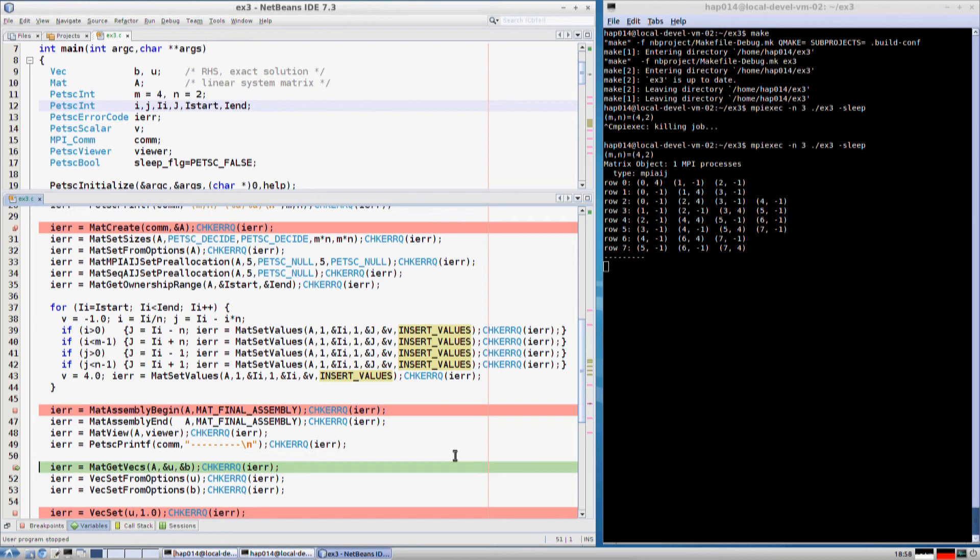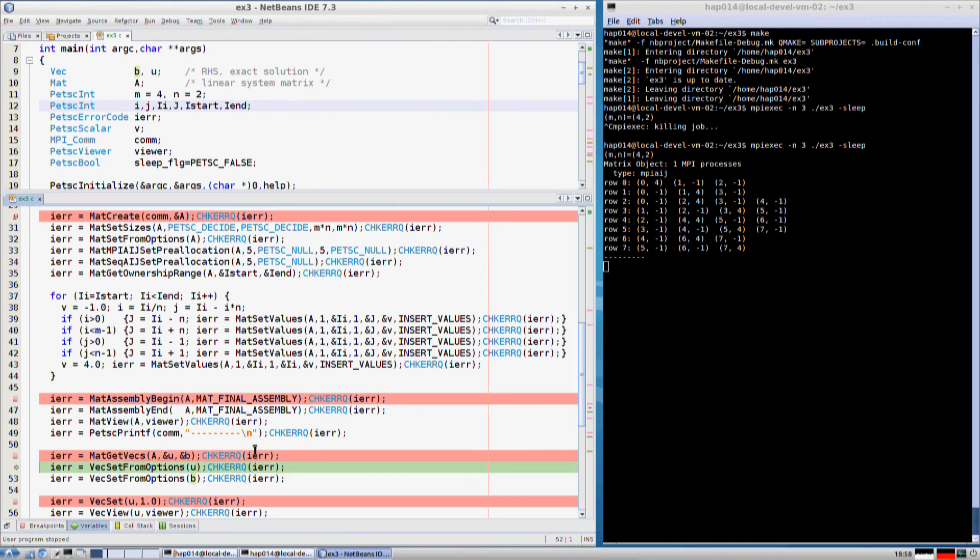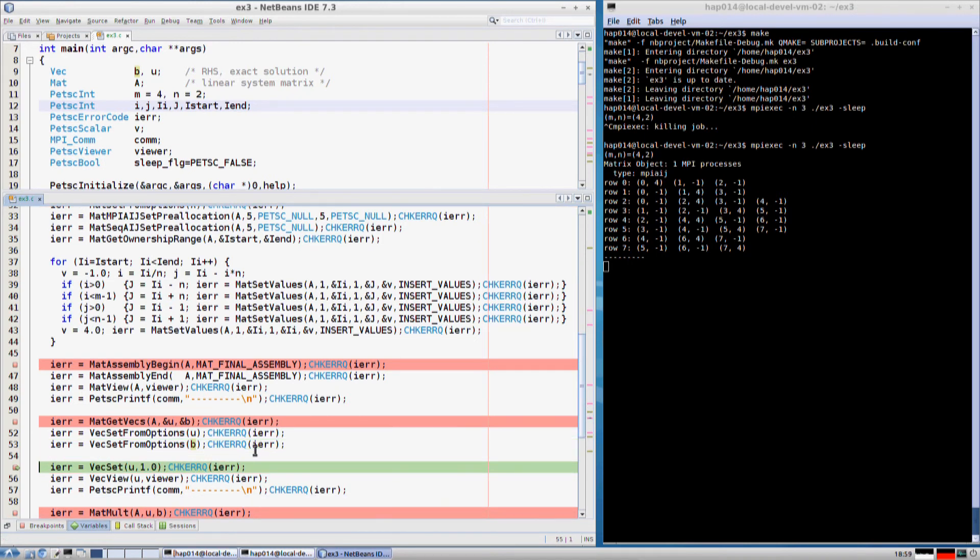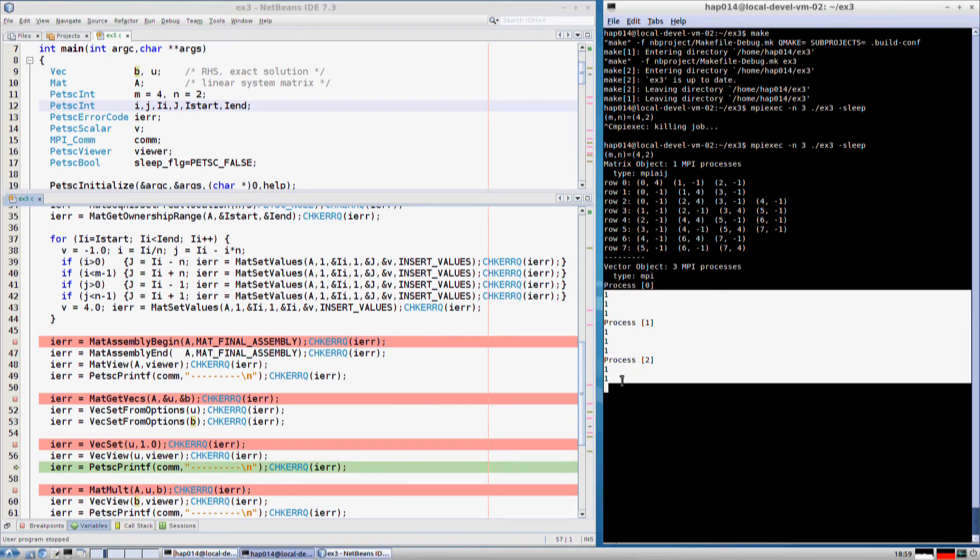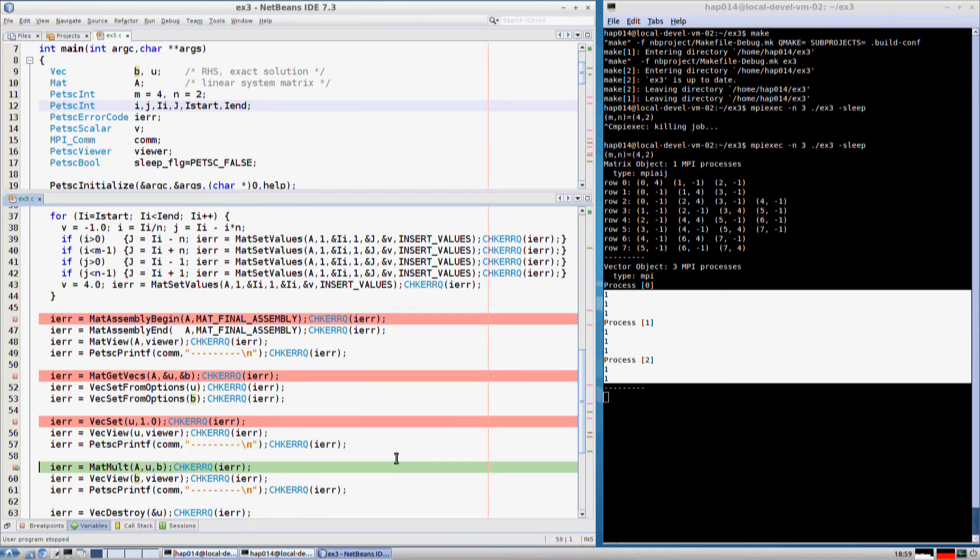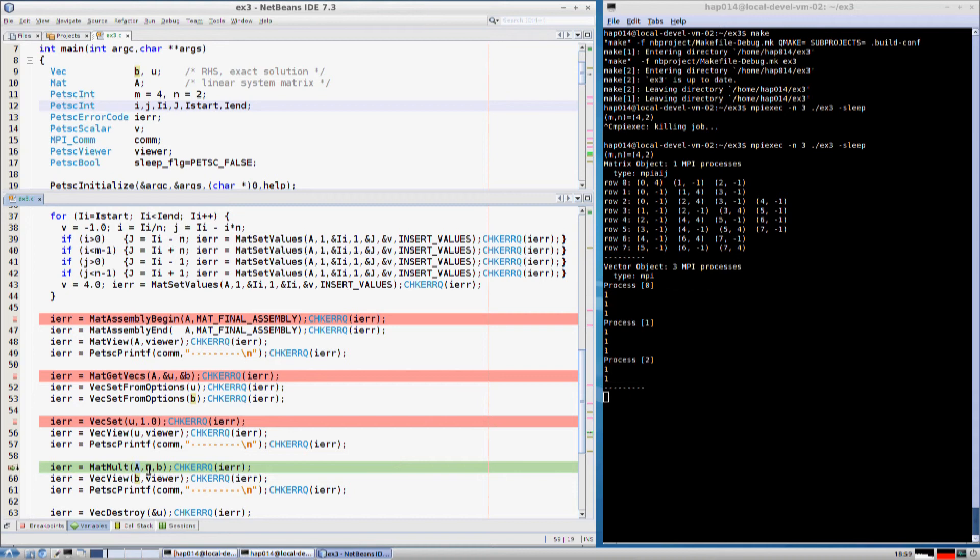Here we call MatGetVecs to get the compatible left and right hand side vectors u and b. Just like in previous tutorial, u will be all ones. Finally we will get the matrix vector product of A and u, storing the result into the vector b.